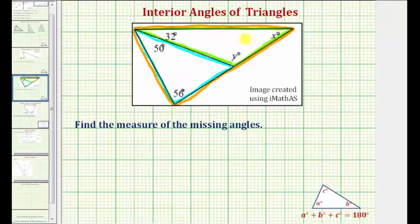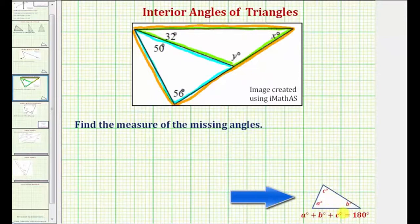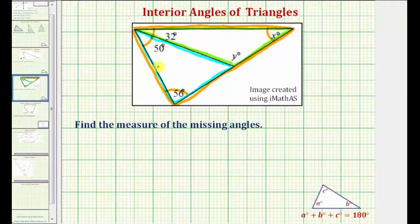If we focus on the large triangle, we can determine the measure of angle x by using the fact that the sum of the interior angles of any triangle is equal to 180 degrees. So again, focusing on the large triangle, the sum of this angle, this angle, and this angle must be 180 degrees.